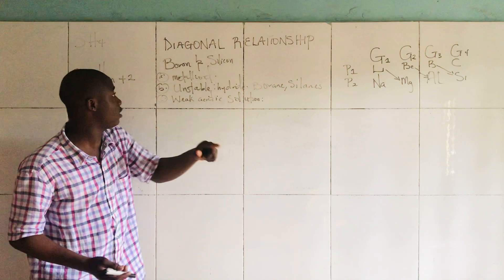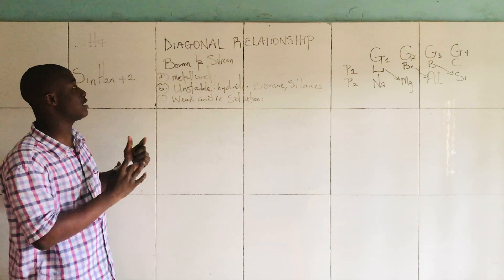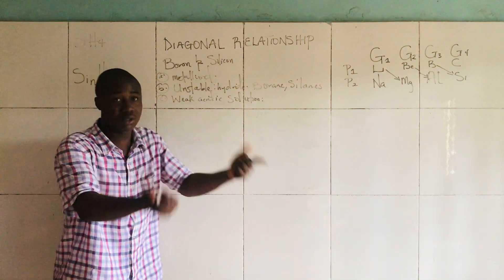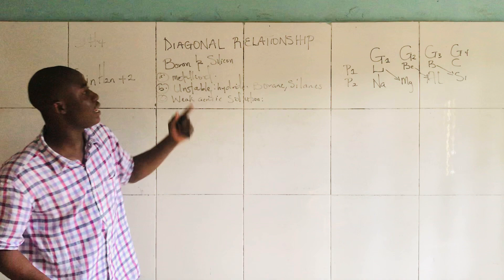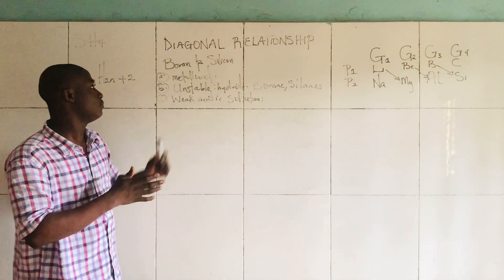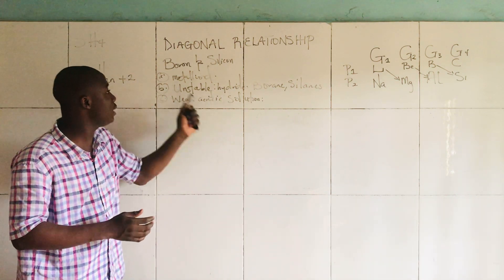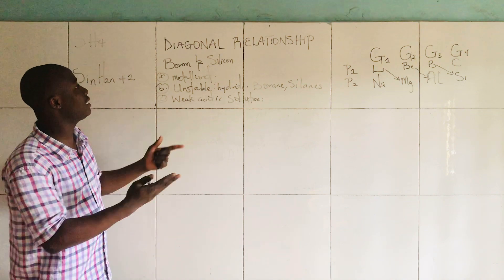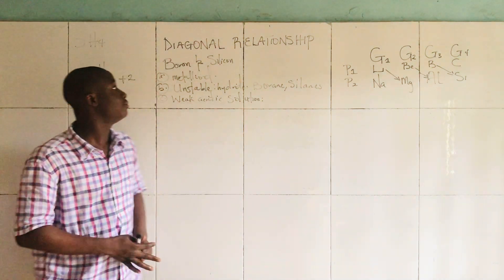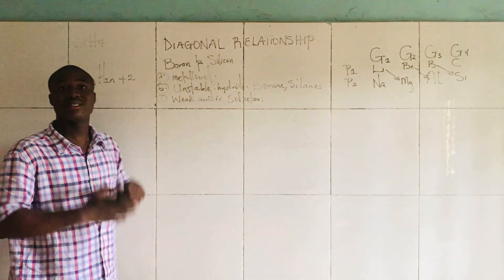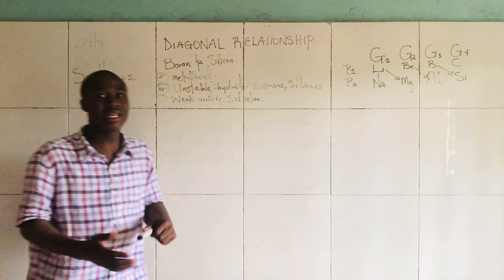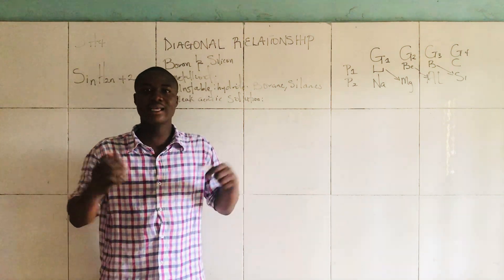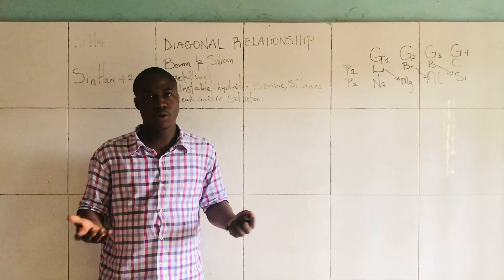To summarize, the diagonal relationship of Boron and Silicon is that they are both metalloids, their hydrides are usually unstable, and they form weak acidic solutions. These are the key concepts about the diagonal relationships seen in the periodic table. Thanks for watching.